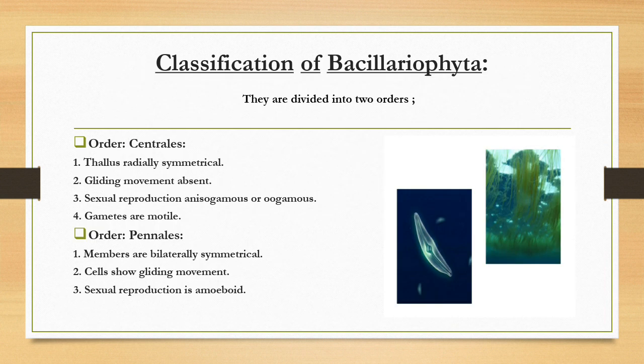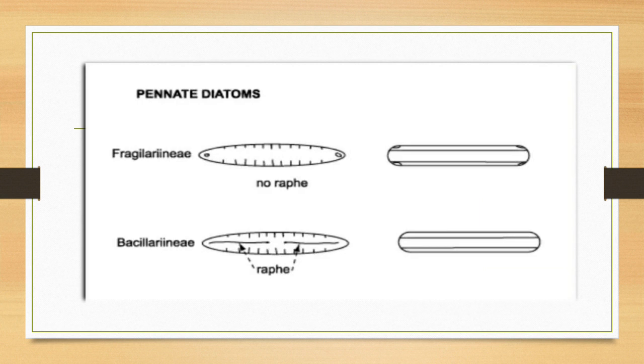Classification of Bacillariophyta: They are divided into two orders. The first is Centrales, which are radially symmetrical, have absent gliding movement, and sexual reproduction occurs in anisogamous or oogamous forms, with motile gametes. The second order has bilateral symmetry, cells show gliding movement, and sexual reproduction is amoeboid. You can see in the diagram that one type has raphes and the other has no raphes.